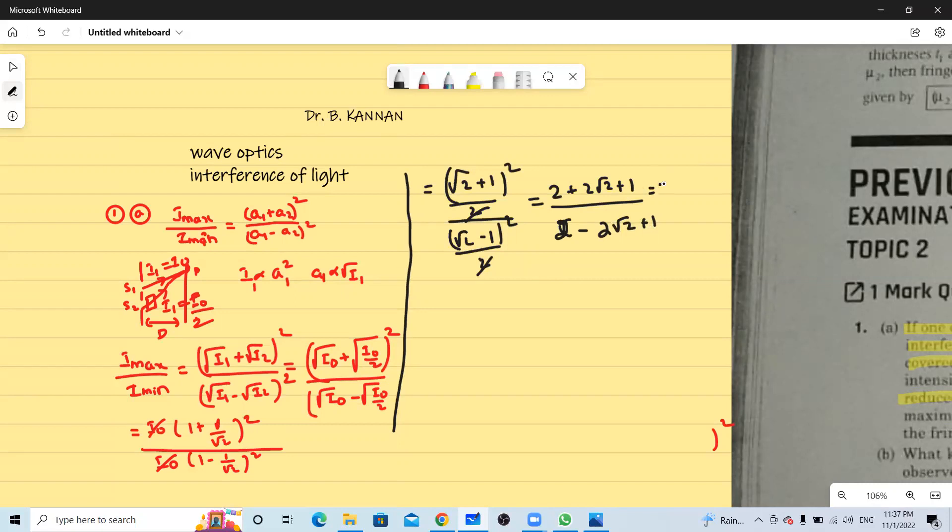This will be a square plus 2ab plus b square. So this will be 3 plus 2 root 2. This will be 3 minus 2 root 2. So intensity maximum by intensity minimum will be 3 plus 2 root 2 by 3 minus 2 root 2.